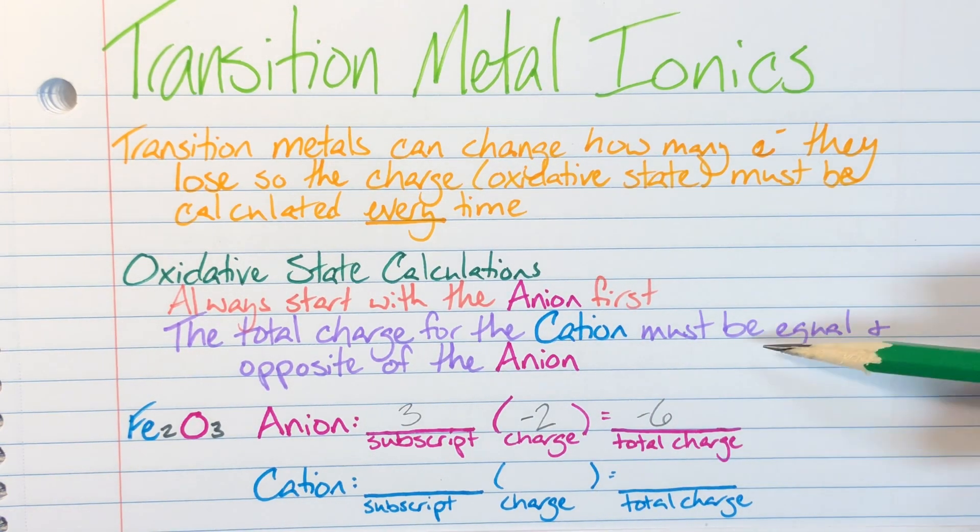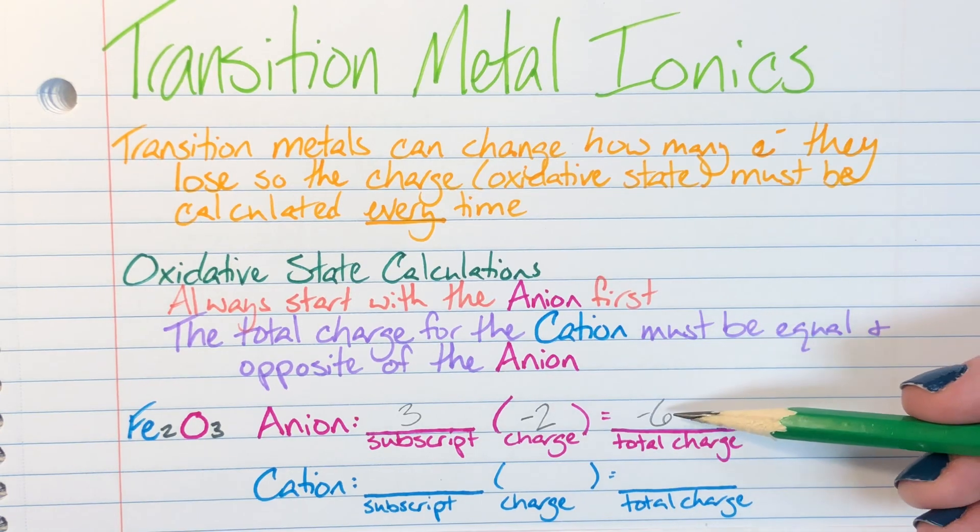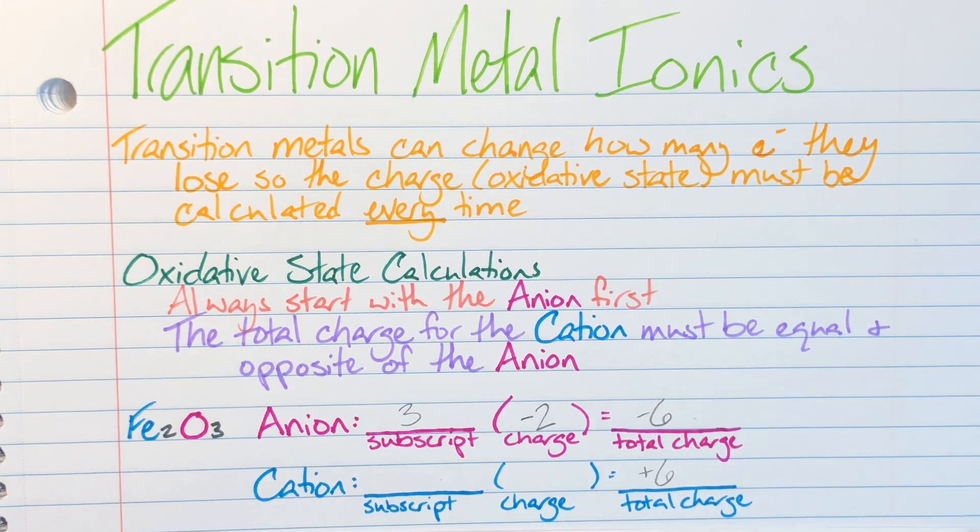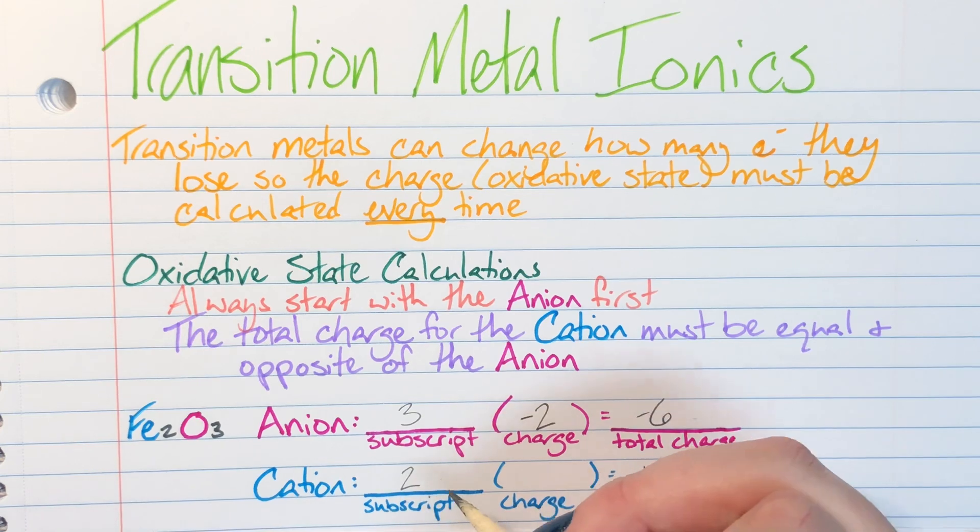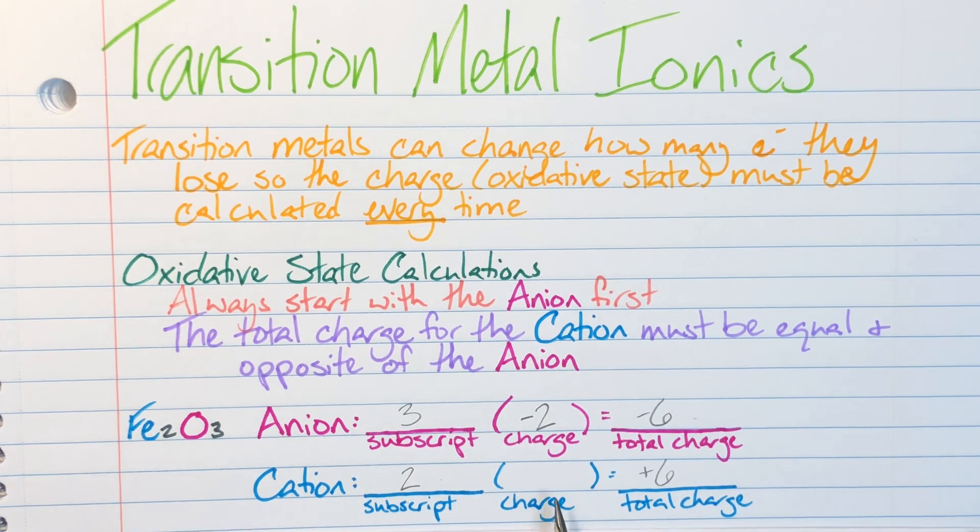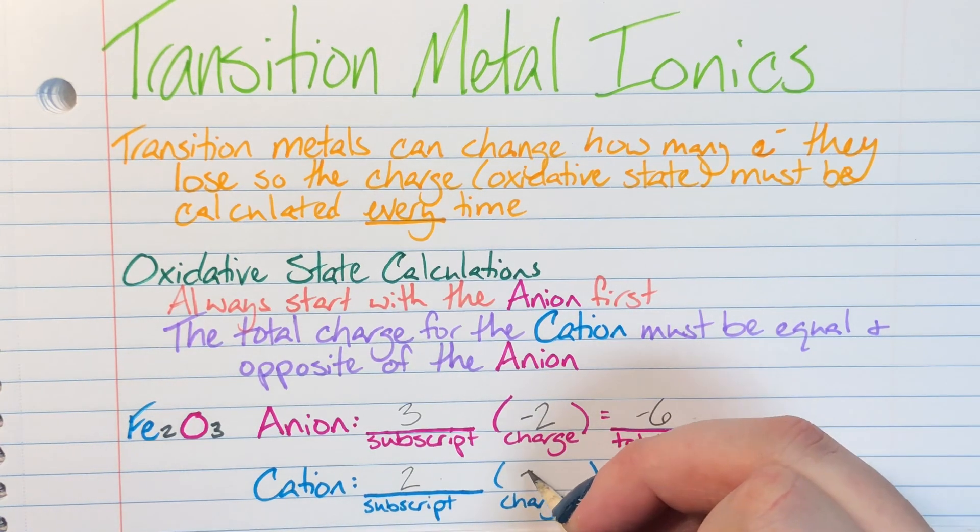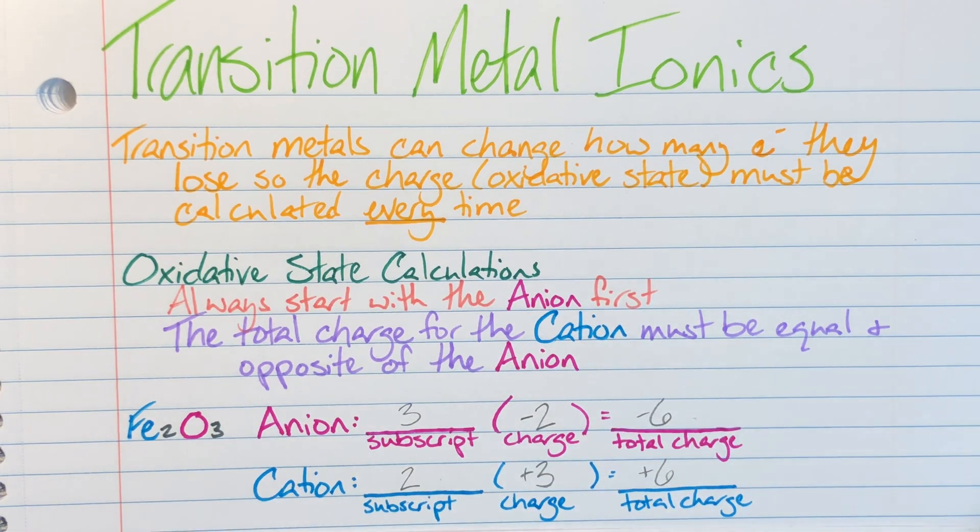Since my total charge for my cation has to be equal and opposite of my anion, I can go ahead and say what is the opposite of negative six? Oh, well, positive six. Then I can figure out for my cation, my subscript for my cation is two. And that means that my only missing piece of information here is going to be my individual ions or irons charge. And I can figure that out by saying, okay, well, what is two times something? And that's going to give me positive six. Oh, I know. Positive three.